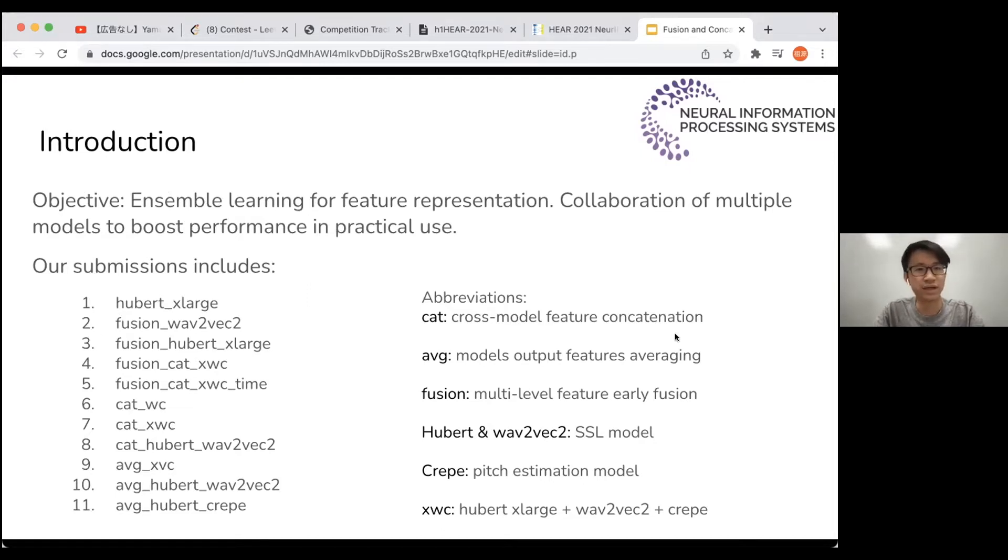We have a total of 11 submissions so as to compare the contribution and influence of each operation or model. We have totally three kinds of models: Hubert and Wave2Vec2, which are SSL huge models, and CREPE, which is a supervised pitch estimation model.